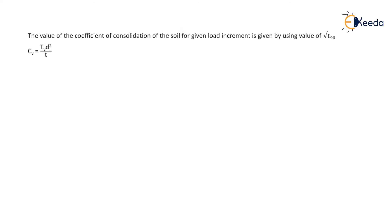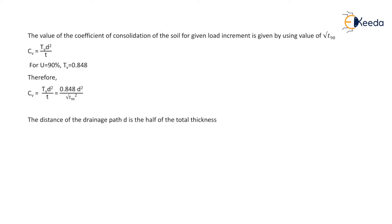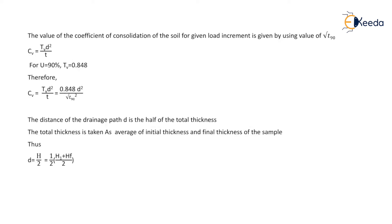The formula for coefficient of consolidation is Cv = Tv × D² / T. For U equal to 90%, the value of Tv is 0.848. Therefore, Cv = 0.848 × D² / (root T90)². The drainage path distance D is half the total thickness when drainage occurs from both sides. The total thickness is taken as the average of the initial and final thickness of the sample: D = H/2 = (1/2) × (H1 + HF) / 2. For single drainage, D equals the full average thickness: D = (H1 + HF) / 2.